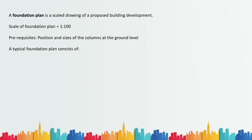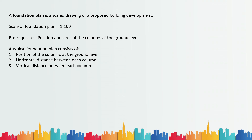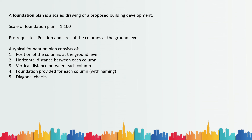Now let's see what a typical foundation plan consists of. Number one is the position of the columns at the ground level. Number two is the horizontal distance between each column. Number three is the vertical distance between each column. These are the first three things to mark when starting the foundation plan. Number four is the foundation provided for each column — it may be a sloped footing, a combined footing, or whatever — and that foundation needs to be shown along with its naming.